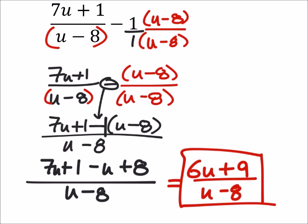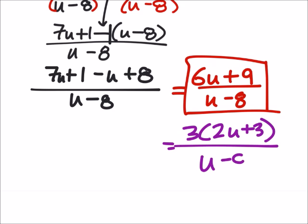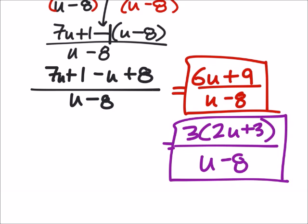I can factor out a 3 from the 6 and the 9, so we'll show that 2u plus 3 all over u minus 8. This would be our actual final answer there.